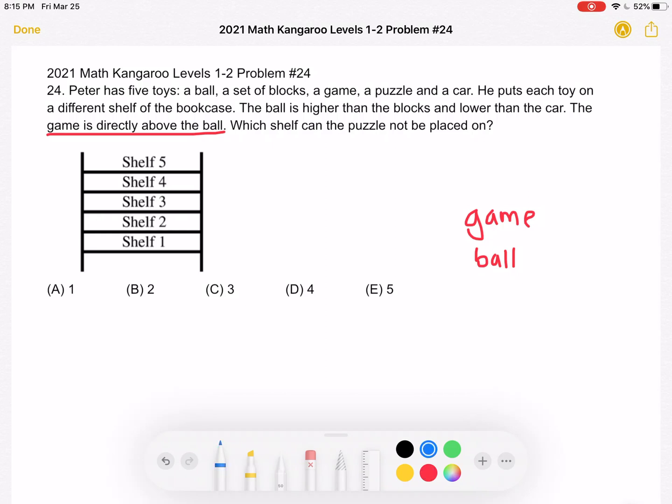Then we also know that the ball is higher than the blocks. So we don't know exactly where, but the blocks are below the ball. And we know that the ball is lower than the car, so the car is somewhere above. And we're trying to figure out which shelf can the puzzle not be placed on. So let's go through each answer choice.